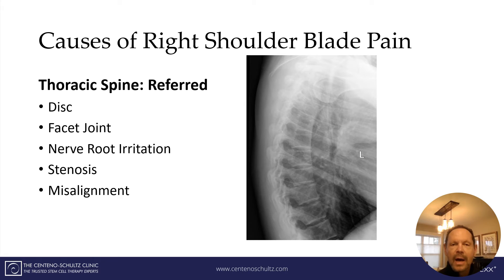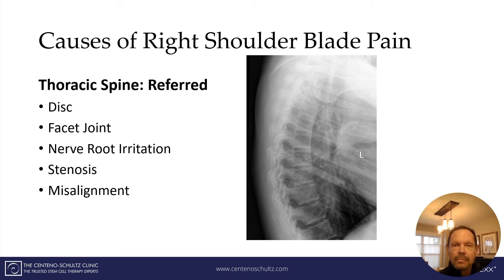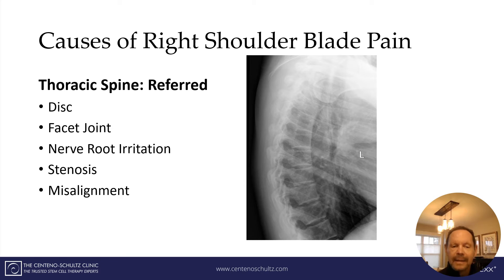The next cause of right shoulder blade pain is thoracic pain. It too can be referred into the right shoulder blade, and there can be injuries to the disc, the facet, the nerves that exit, and also stenosis.